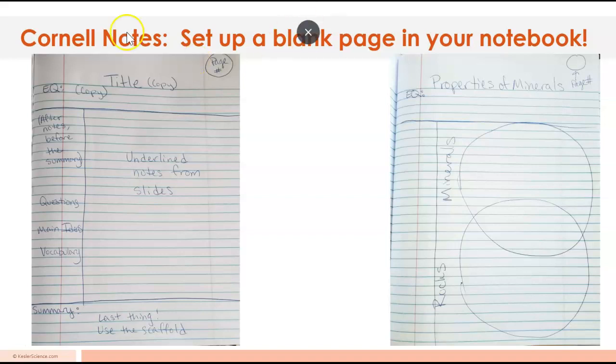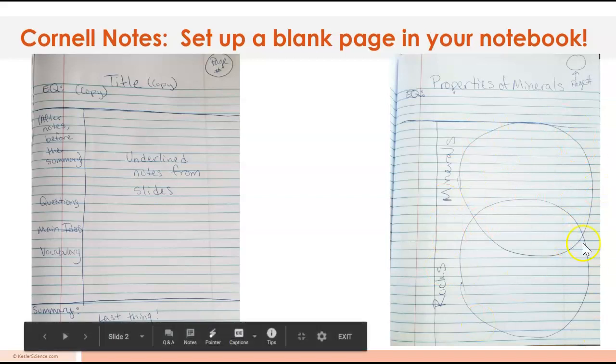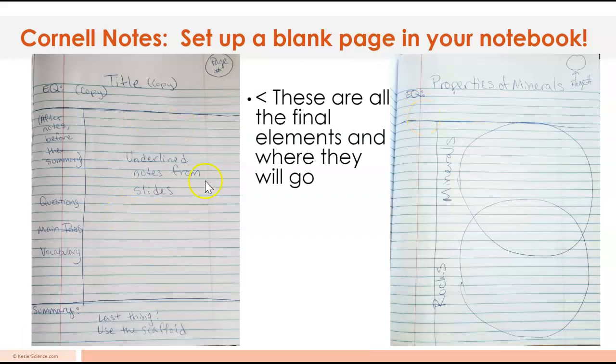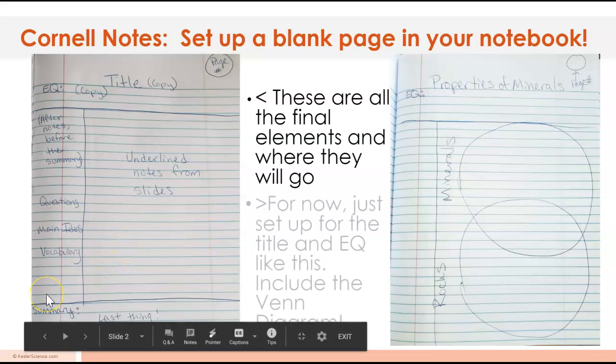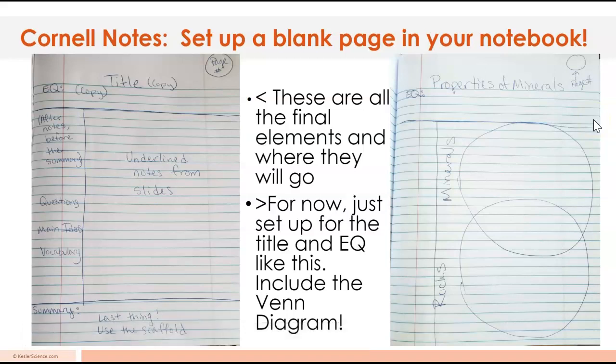We're gonna do Cornell notes but with a little addition. We're gonna add a Venn diagram here and we're gonna compare rocks and minerals when we start. After we get done with that, it's just gonna be like classic Cornell notes. The final elements you'll have are the title, the EQ, the page number, the body of your notes. You're gonna annotate the side afterward and then the summary is gonna be the last thing.